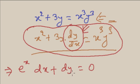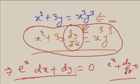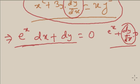Suppose e to the power x dx plus dy is equal to 0 — this is also a differential equation. Why? If you divide through with respect to x, you get e to the power x plus dy/dx equals 0. This equation is equivalent to the previous one, so it also contains a derivative, making it a differential equation. Any equation that contains a derivative is a differential equation.